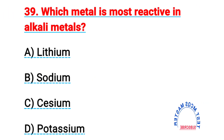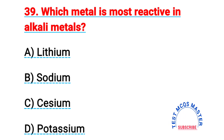Question number thirty-nine: which metal is most reactive among alkali metals? The right answer is C, cesium.